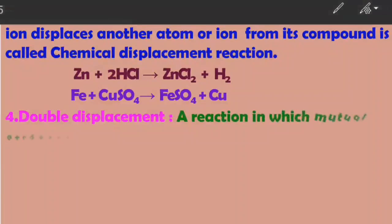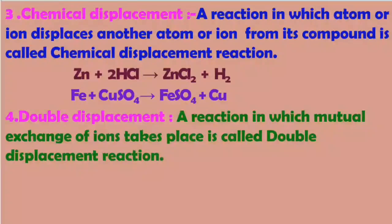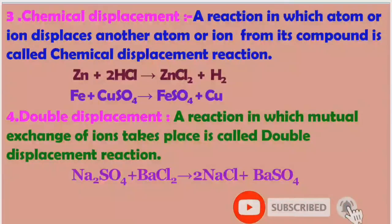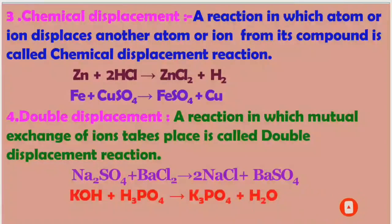The last type is double displacement reaction. A reaction in which mutual exchange of ions takes place is called a double displacement reaction. For example, sodium sulfate reacts with barium chloride to form sodium chloride and barium sulfate. Another example: potassium hydroxide reacts with phosphoric acid to form potassium phosphate and water. In both reactions, mutual exchange of ions takes place.